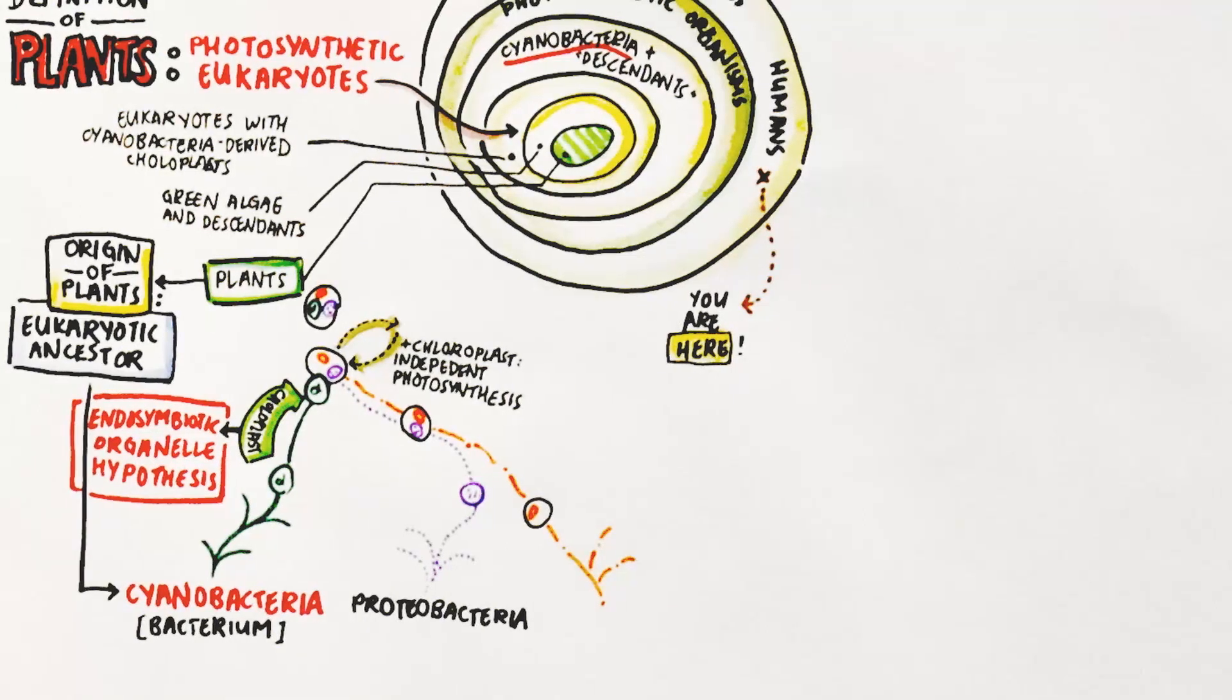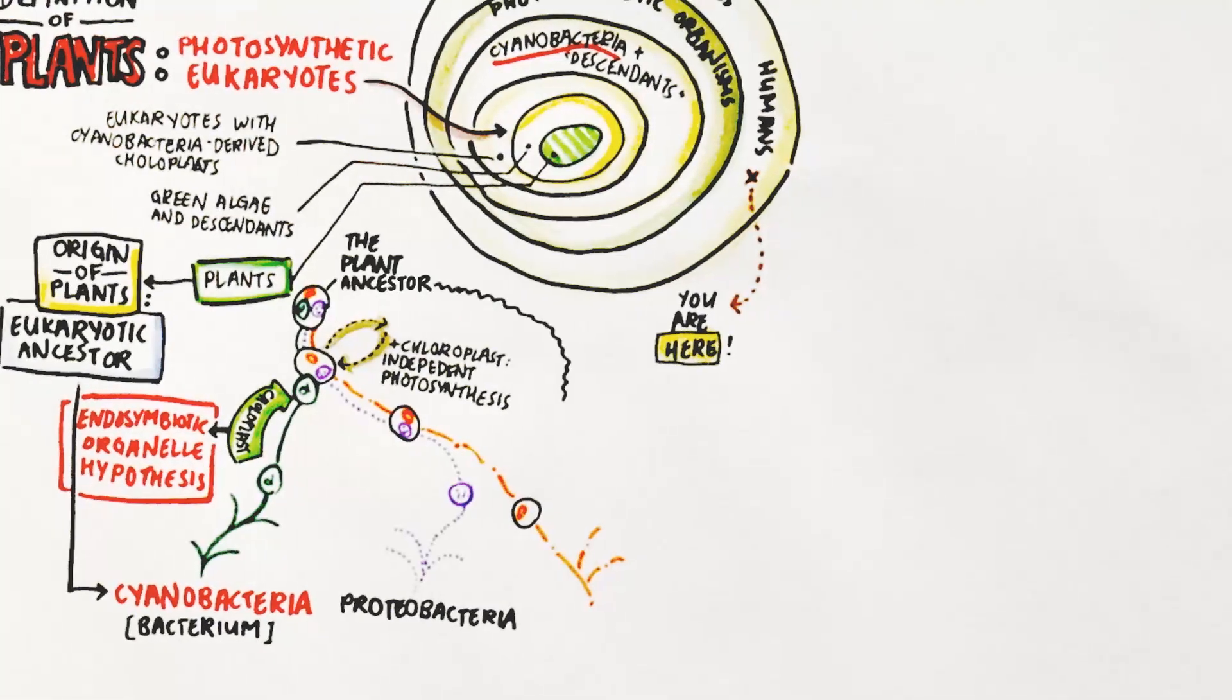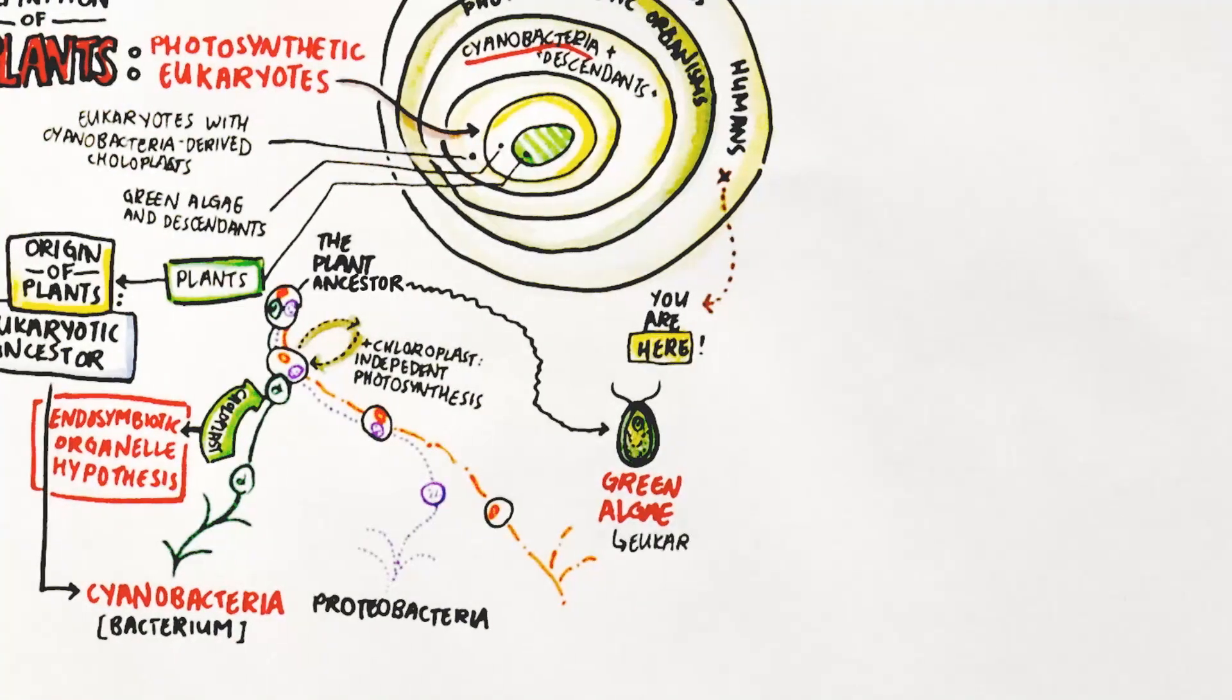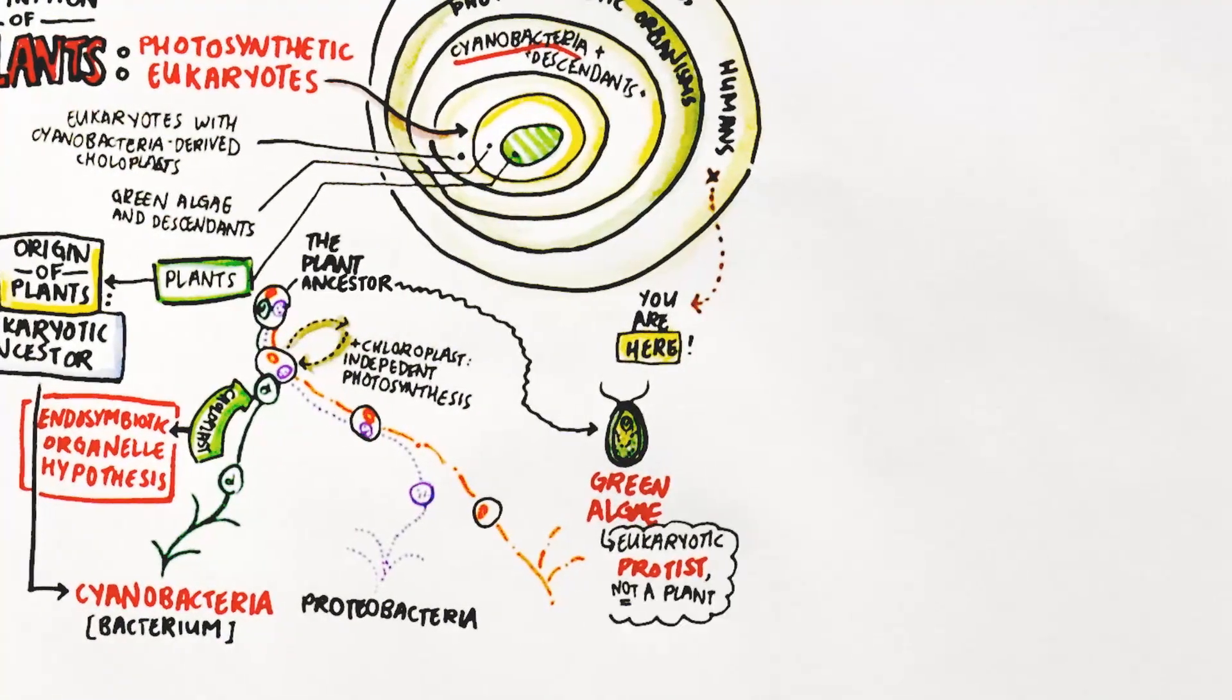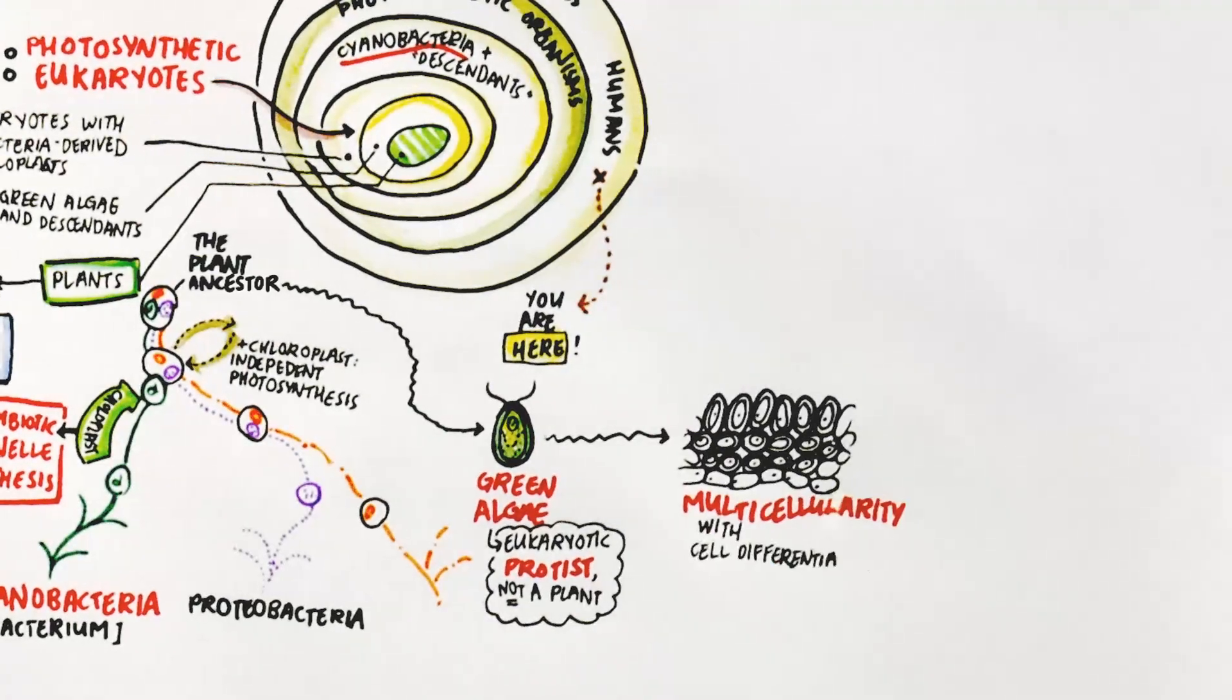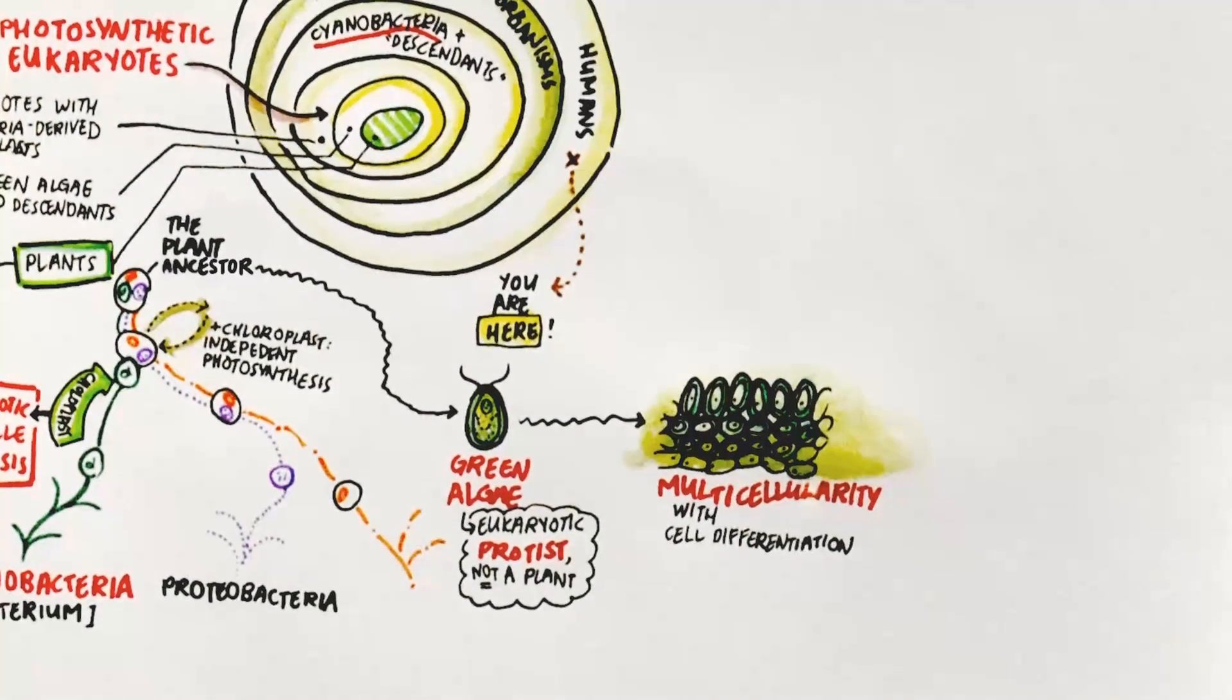The chloroplast-carrying cell developed to have an authentic nuclear structure represented by green algae, which is not a plant but a eukaryotic protist. The change continued towards multicellularity and resulted in what we know as plants.